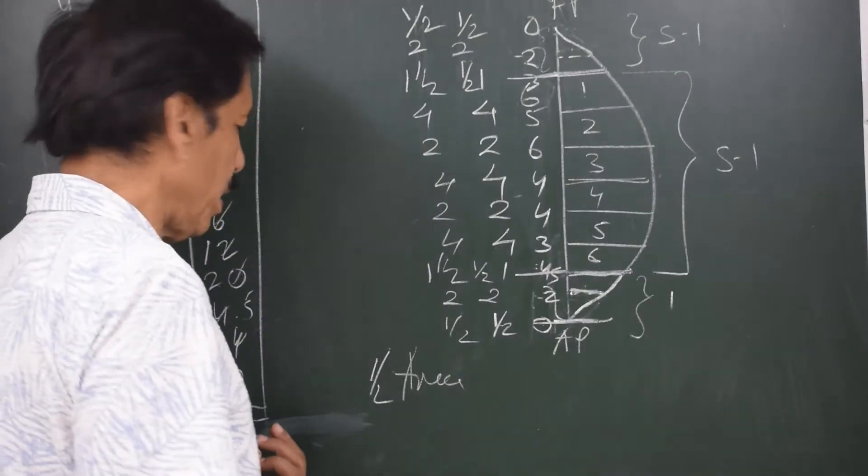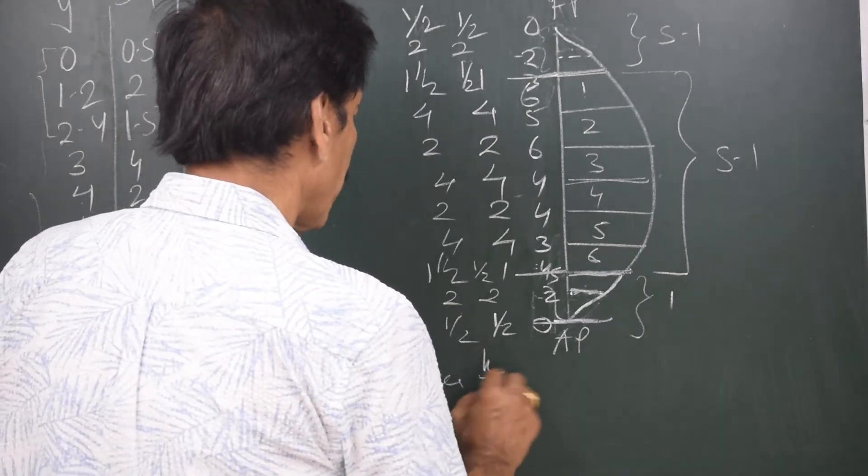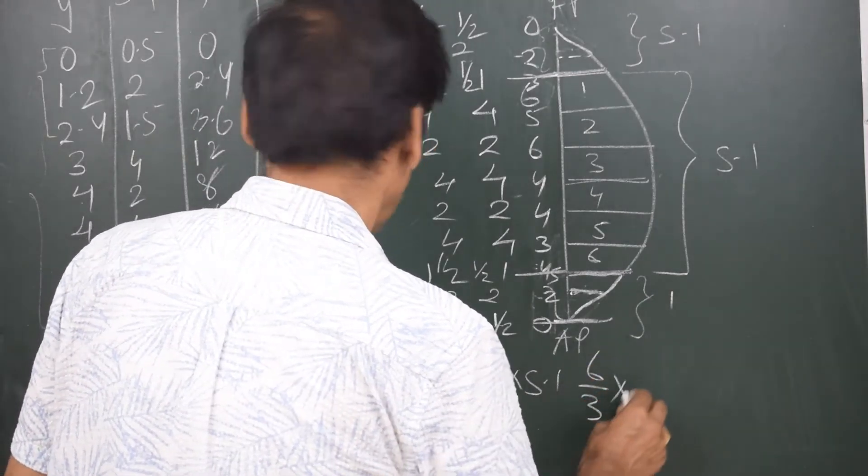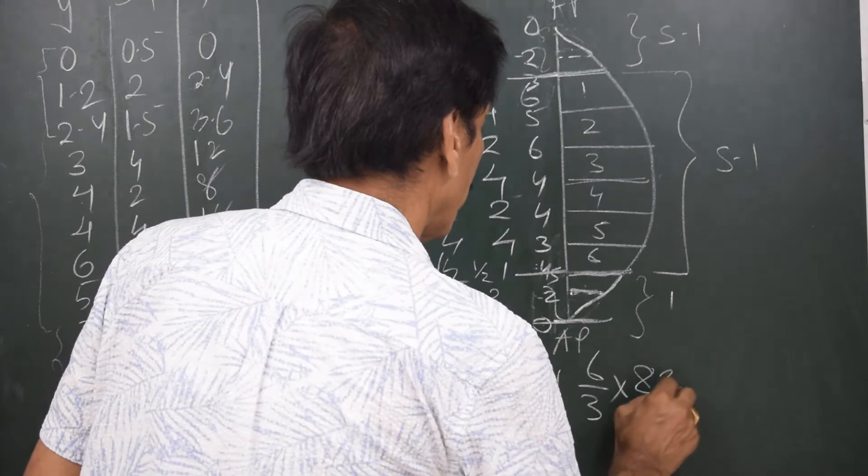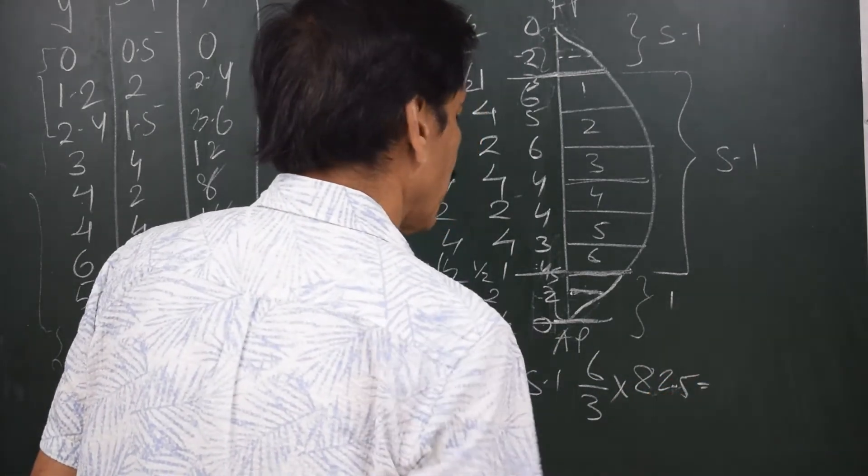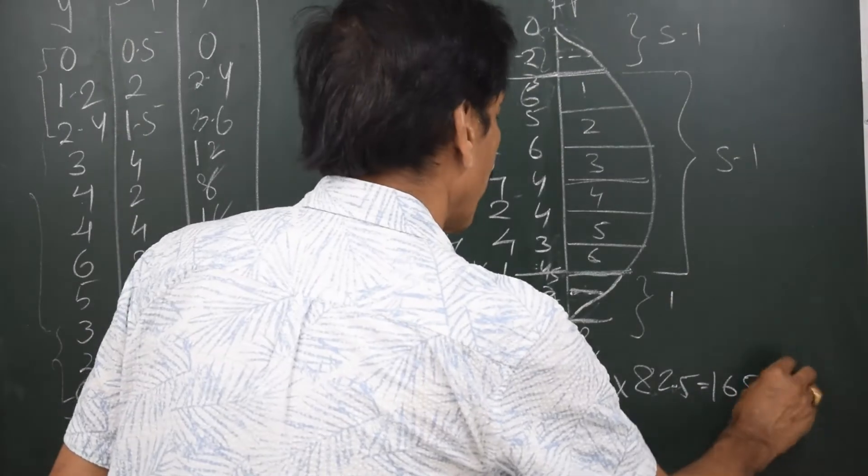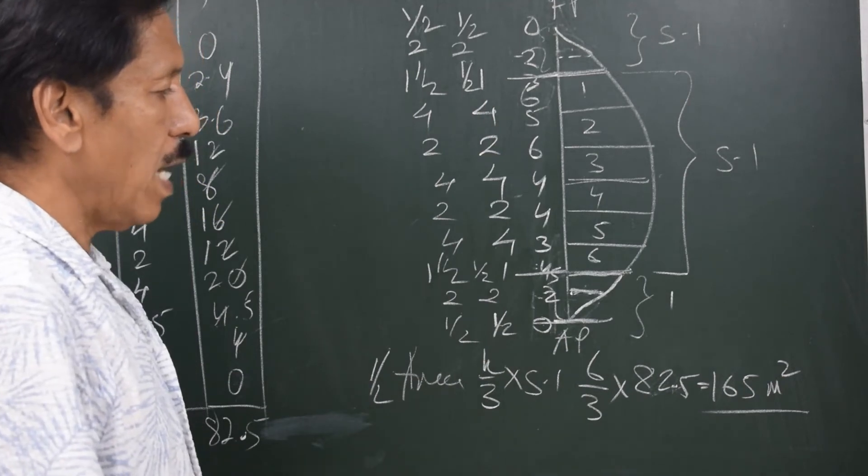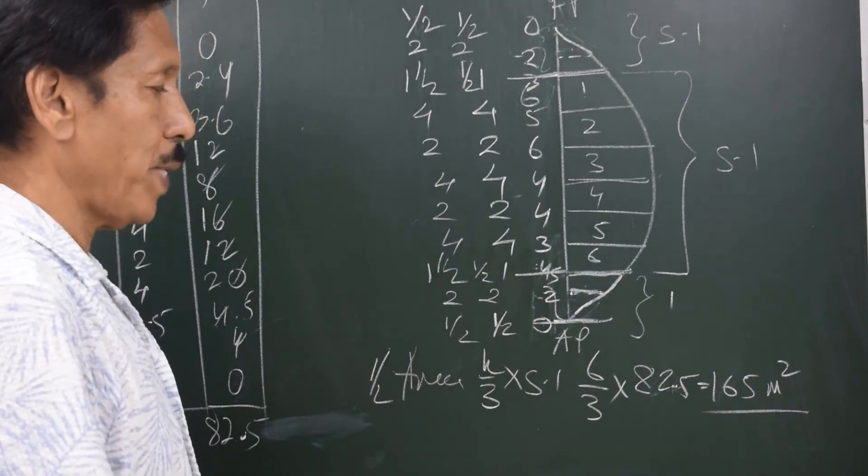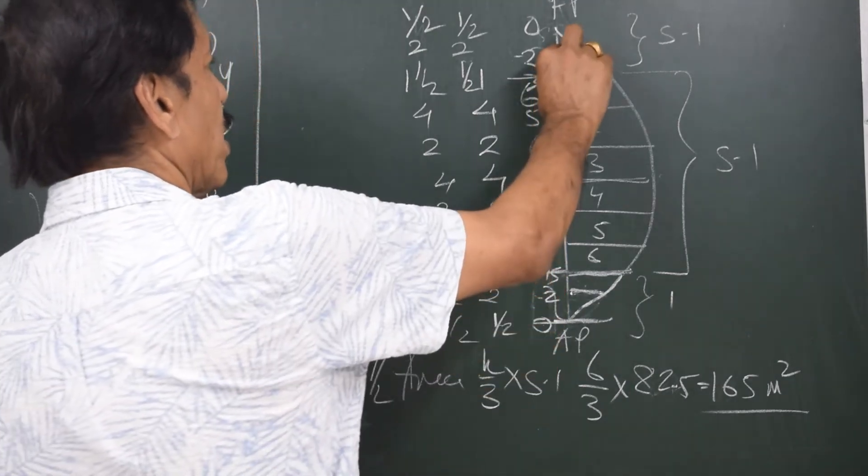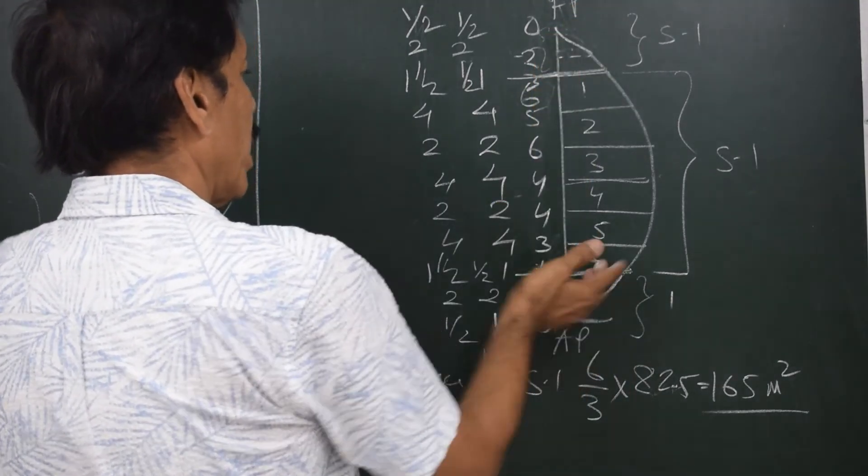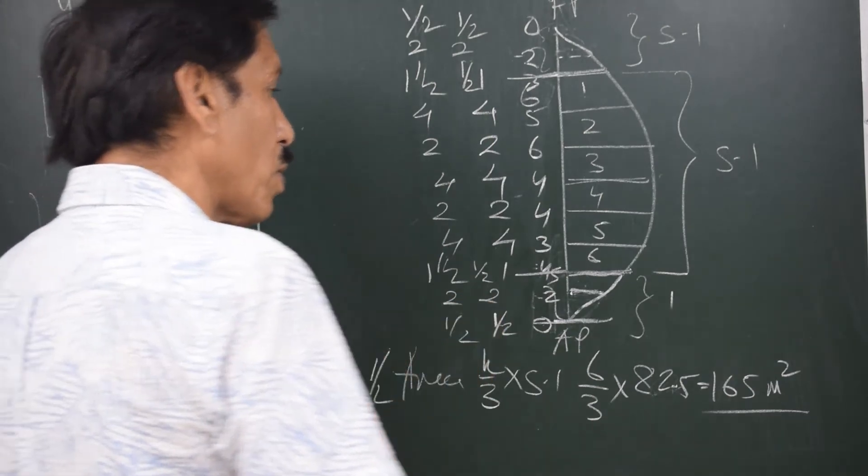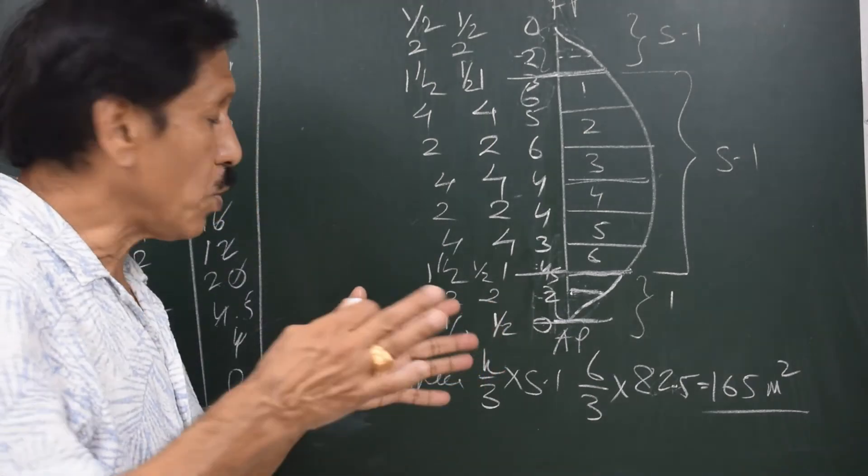82.5. So half area would be H by 3 into sum, so that is 6 by 3 into 82.5, which equals 165 meter square. This is the half area that is the area depicted by this outline: 165 meter square. So we have already compensated for the separation distance being half over here and over here compared to the middle body. So we got the area is 165 meter square. Now let us find out what is the LCF. For the fourth column, I need to write down the lever.